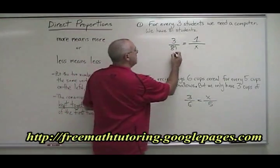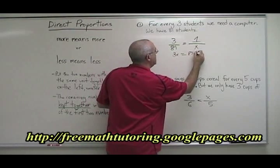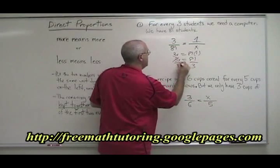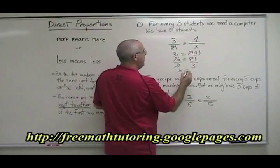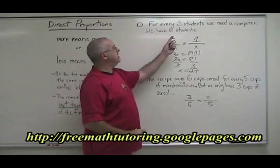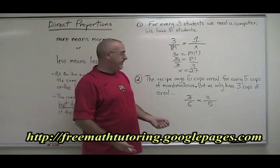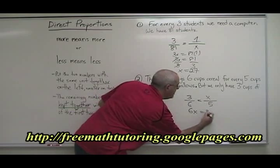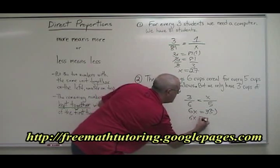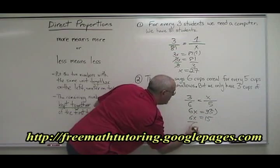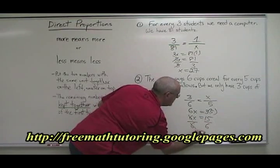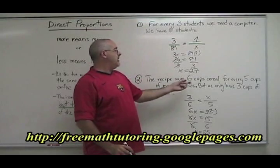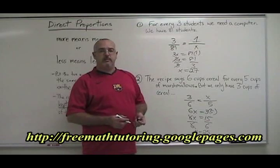If we use the fundamental rule of proportions to solve the first example, we find out that we need 27 computers if we have 81 students, and that answer makes sense. For the cereal example, 6x equals 3 times 5, so 6x equals 15; divide both sides by 6, and x equals 2.5. That makes sense as well — if we only have three cups of cereal, then we only need two and a half cups of marshmallows.